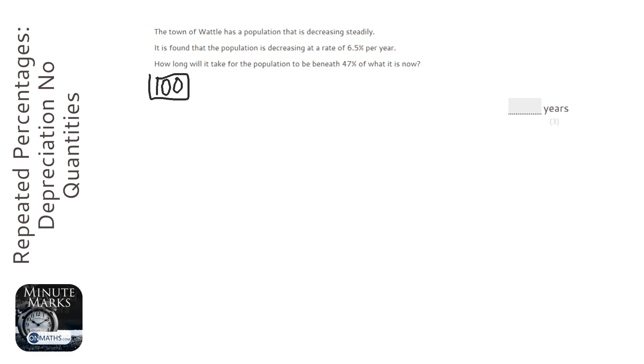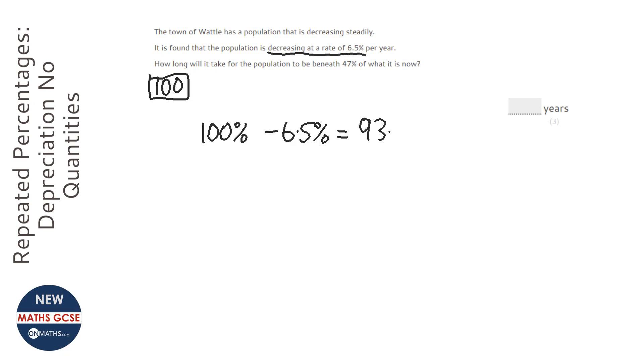So I'm going to pretend that the population of the town at the start is 100. Now this question, as I said, is all about multipliers, so we need to figure out what a decrease of 6.5% as a multiplier is. To do multiplier, you start off with 100%, you do whatever the question is saying, so this time we're decreasing by 6.5%. And this will be on the calculator paper, so you might as well use your calculator to do 100 take away 6.5%.